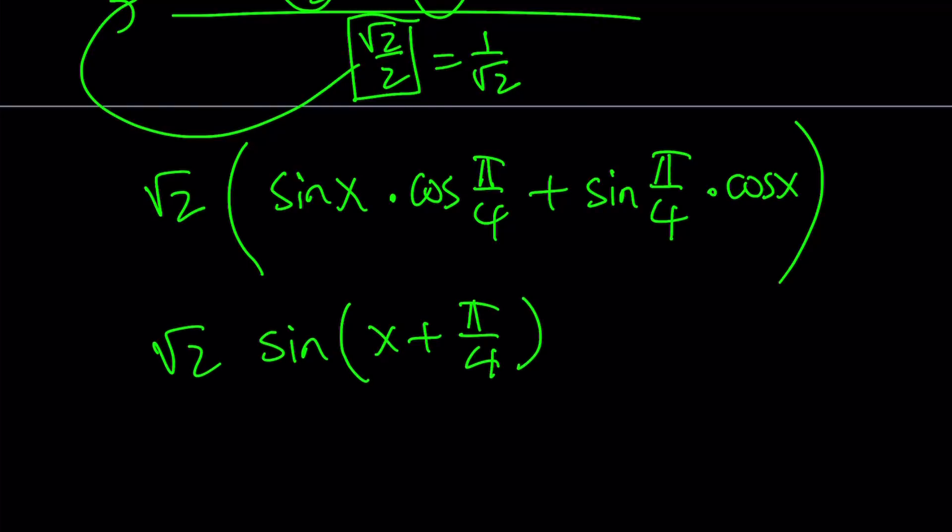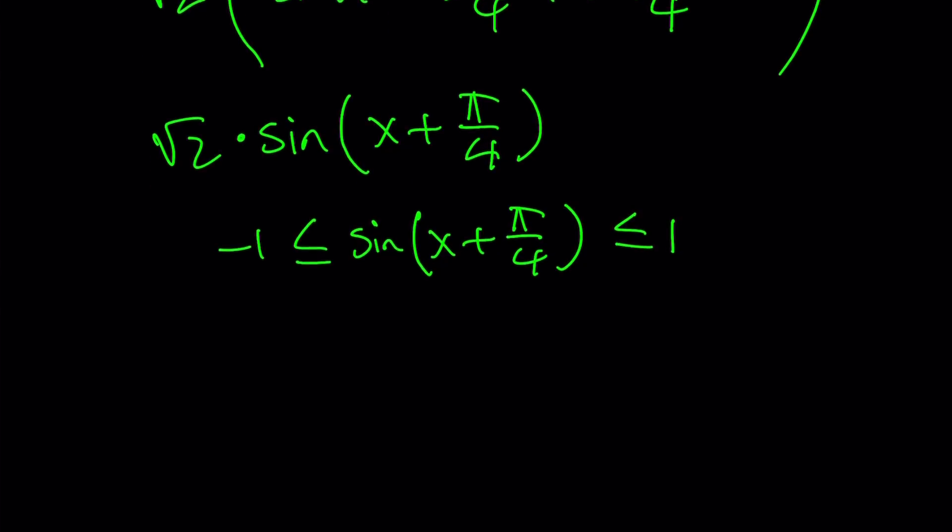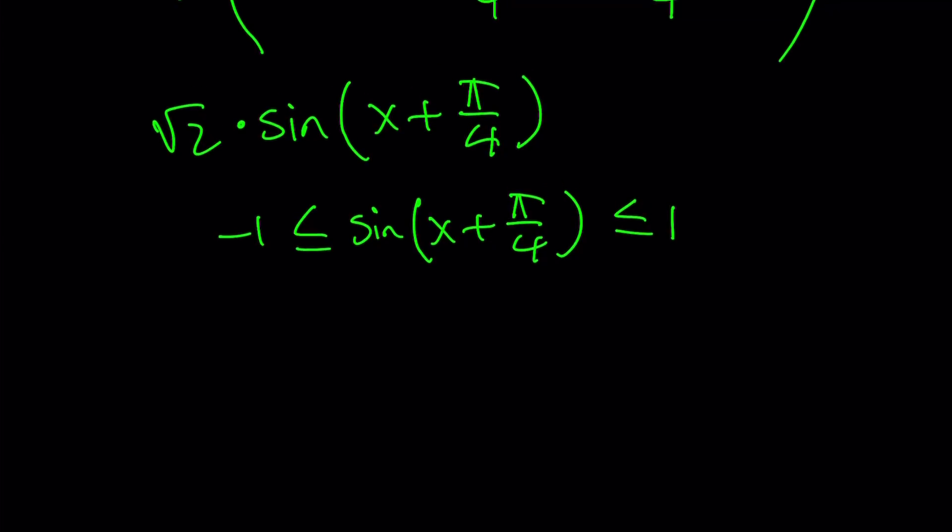So we have square root of 2 times sine of something. And remember, sine of something, doesn't matter what, is always between negative 1 and 1, inclusive, because those are the minimum and maximum values for sine, if x is real, of course.